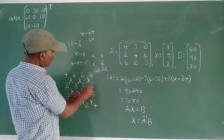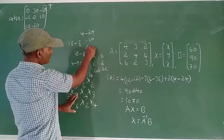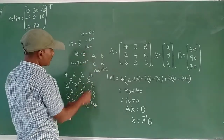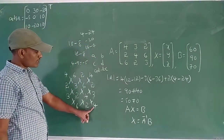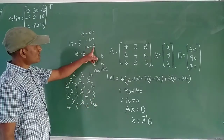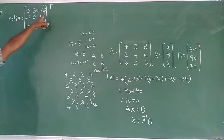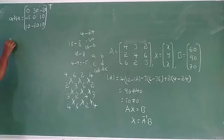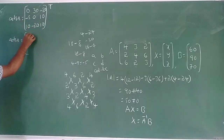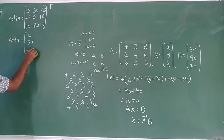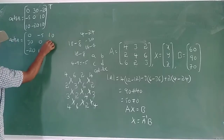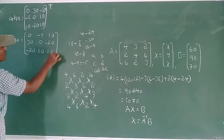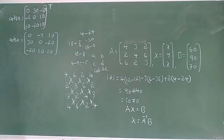Now take the transpose of the cofactor matrix to get the adjoint of A. Adjoint A equals, reading column by column: first column 0, 30, −20; second column −5, 0, 10; third column 10, −20, 10.